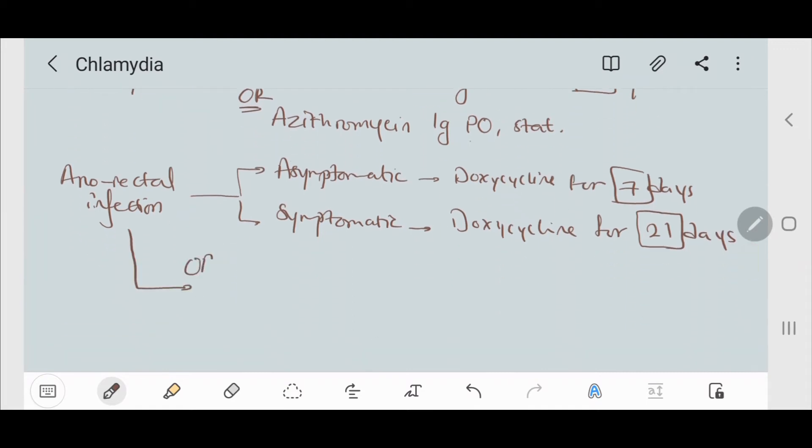There's also an alternative treatment for anorectal infection, which is azithromycin 1 g orally stat and repeat in one week.